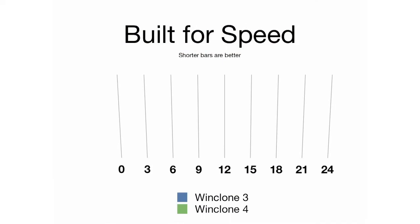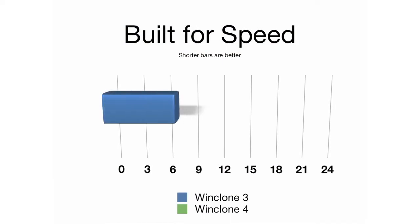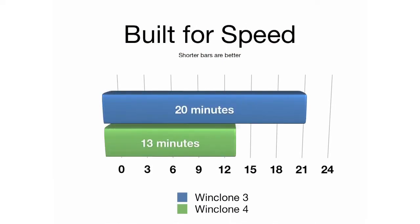The next feature I want to talk about is speed. WinClone 3 was fast, but we wanted to make it even faster. Imaging and restoring are now significantly faster, and we are seeing speeds up to 34% faster on dual-core processors. It will be even better on Macs with faster drives or more processors.